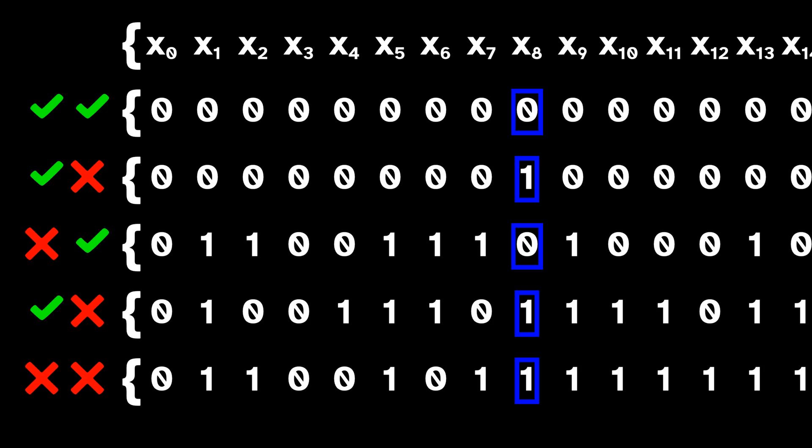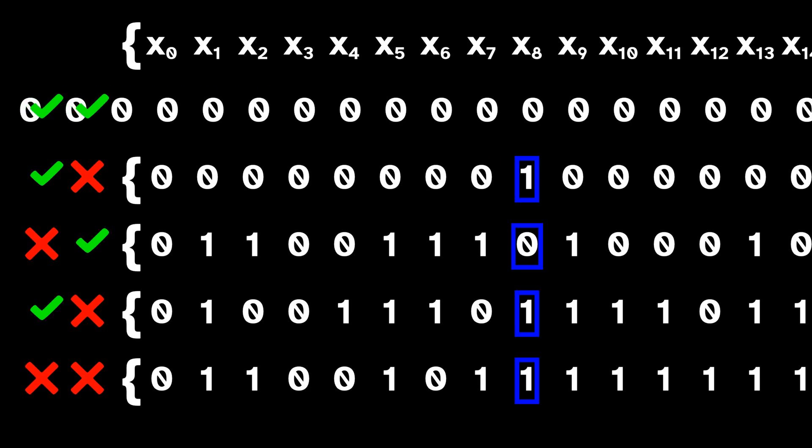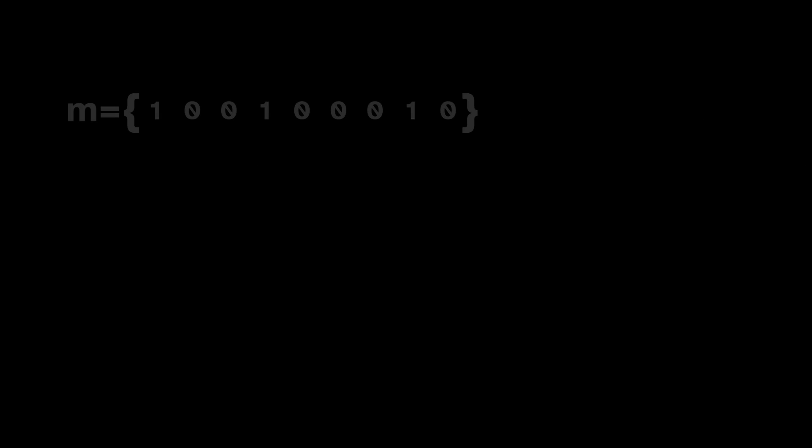Now, to be clear, there are sequences x that x and every shift of x all satisfy the 8th symbol is 0 rule. The sequence of all zeros has that property, but a rule can only specify a subshift if every sequence that satisfies the rule still satisfies the rule after you shift it. That's what it means for a rule to be shift invariant.